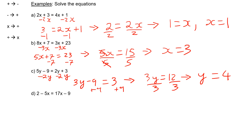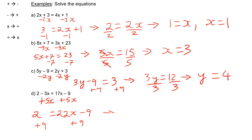In the last question, I'm going to add 5x to both sides because the opposite of minus 5x is add 5x. This leaves me with 2 is equal to 17x plus 5x — sorry, 22x — take away 9. I'm then going to add 9 to both sides, which gives me 11 equal to 22x. Finally, I divide both sides by 22, leaving me with x equal to 11 divided by 22, which is a half.